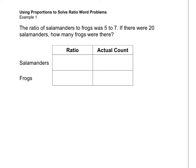Using Proportions to Solve Ratio Word Problems. In this problem there are two kinds of numbers: ratio numbers and actual count numbers. The ratio numbers are 5 and 7. The number 20 is an actual count of the salamanders. Let's read the problem.